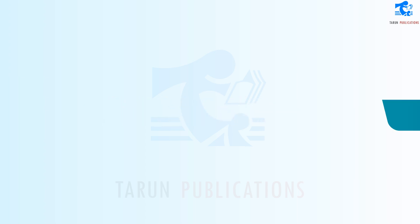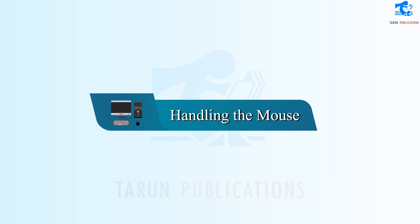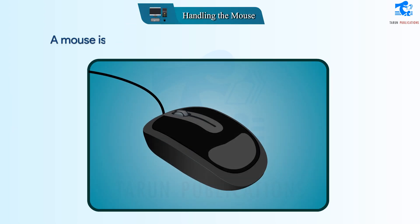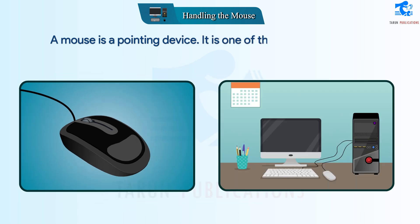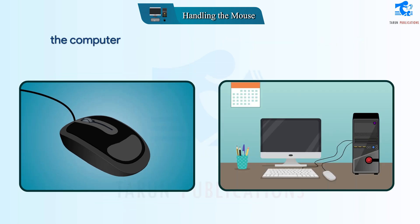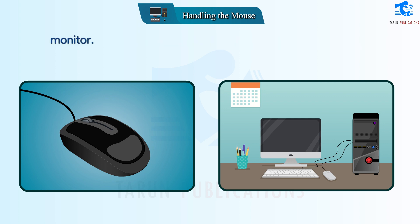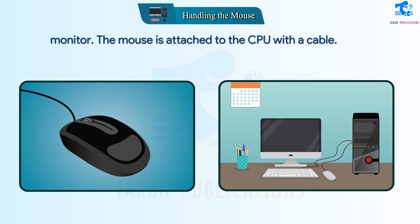Chapter 5: Handling the Mouse. A mouse is a pointing device. It is one of the main components of the computer system. It helps to point and select items on the monitor. The mouse is attached to the CPU with a cable.